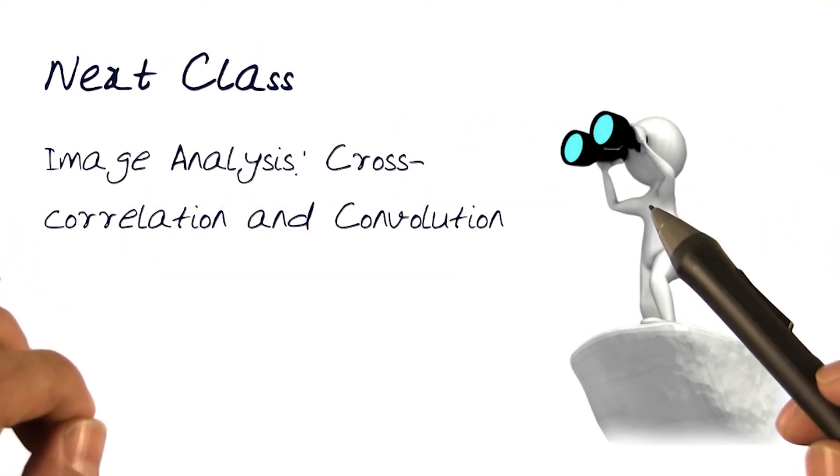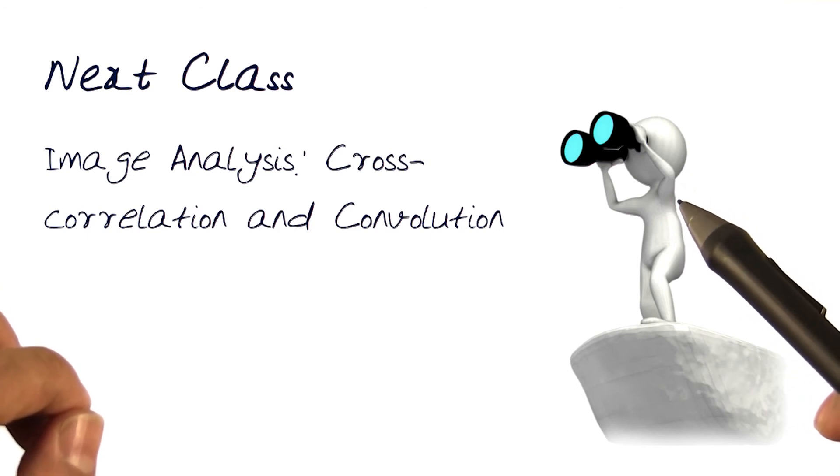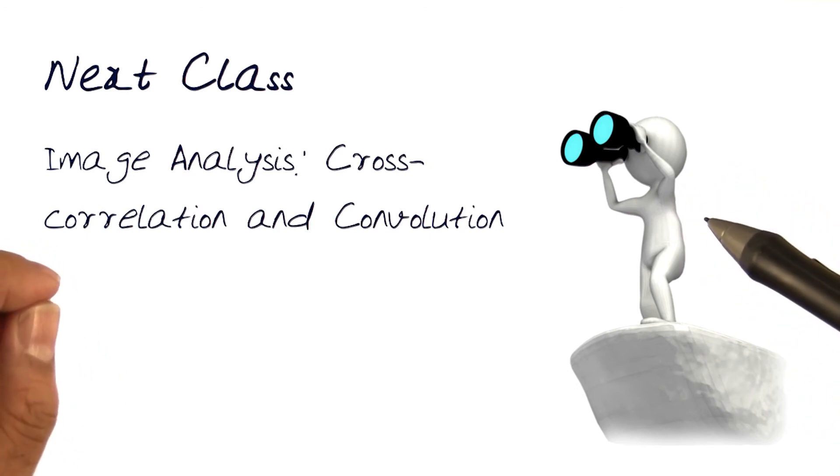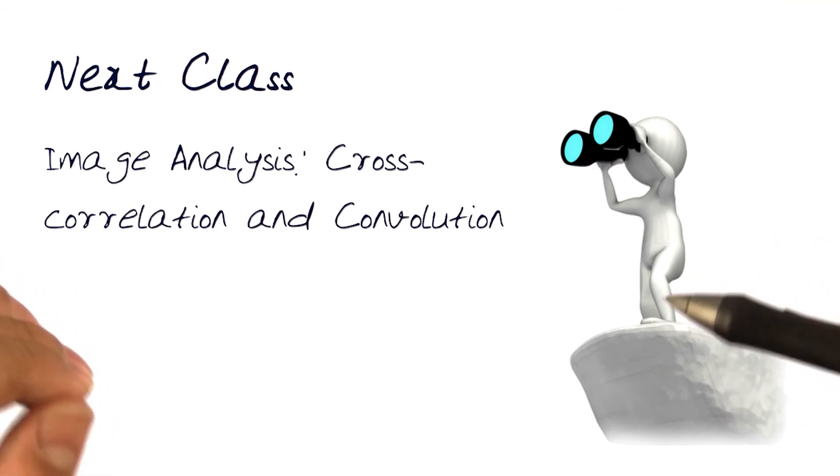I introduced the concept of cross-correlation. We will now start looking at cross-correlation and another method called convolution to help us understand more how we can do simple image processing.